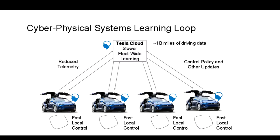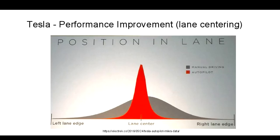Here is a graph that shows in gray human lane-centering performance and in red lane-centering performance when autopilot is engaged. Clearly, the car is doing a better job lane centering. You see in the human lane centering a sort of bias to the right—maybe the machine needs to learn that safety is improved by moving a little bit outside the center of the lane, but that's a policy issue that could easily be implemented.